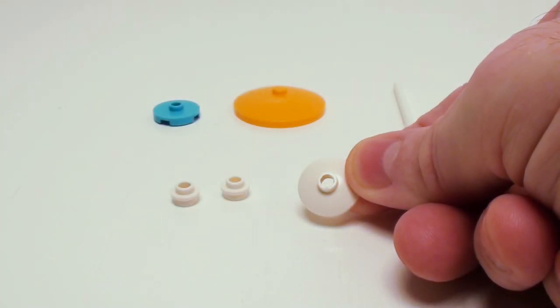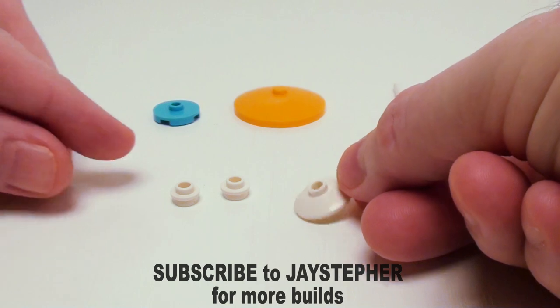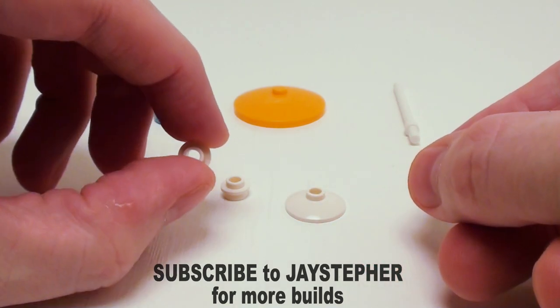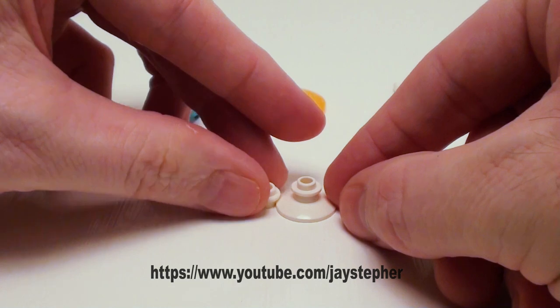Let's start constructing the side table with a 2 by 2 parabola dish. Let's take 2 hollow studs. I'm going to place these on top of one another.